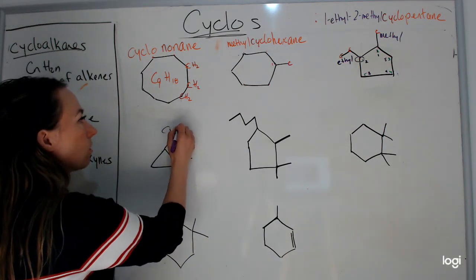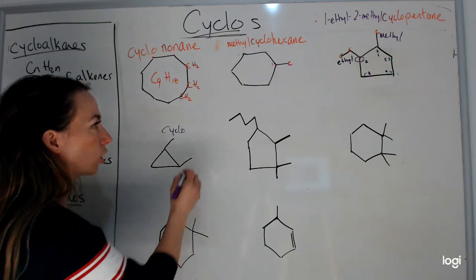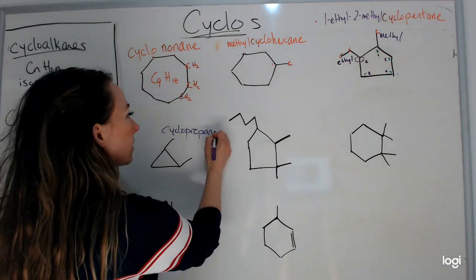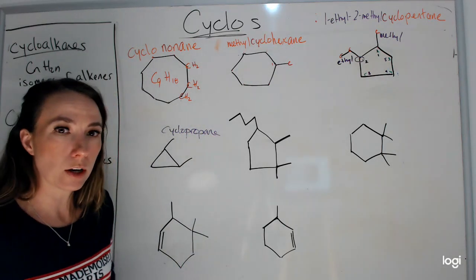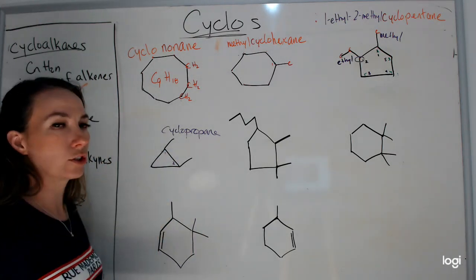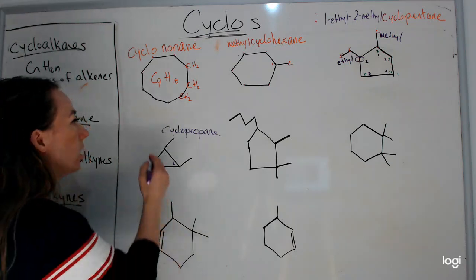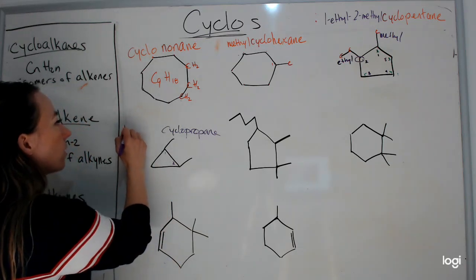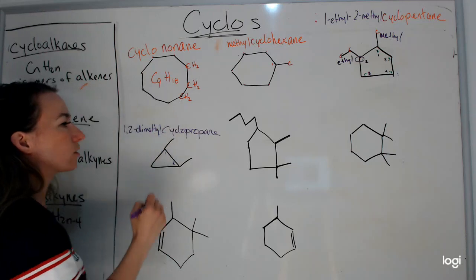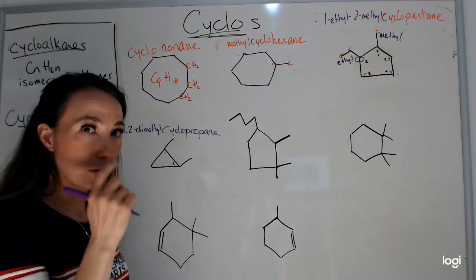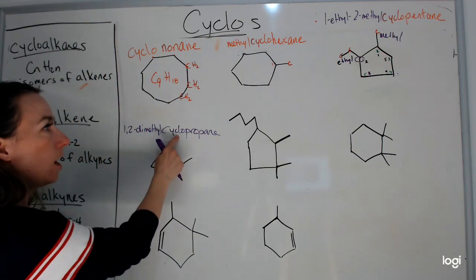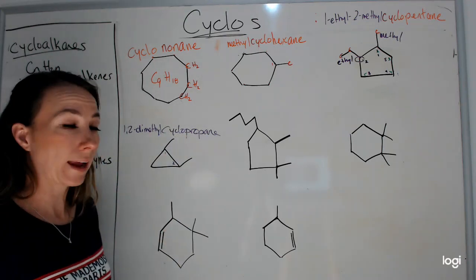This is cyclo because it's in a circle, prop because it's 3 carbons, ane because they're singly bonded — so cyclopropane. I have a methyl on carbons 1 and 2 — so 1,2-dimethyl — because there are two methyls off carbons 1 and 2. This is 1,2-dimethylcyclopropane.